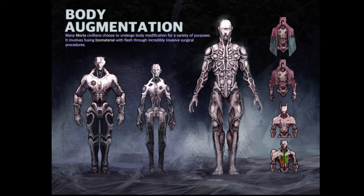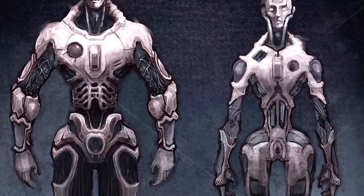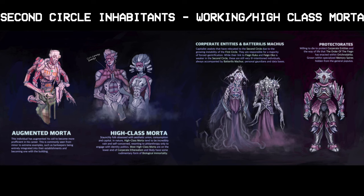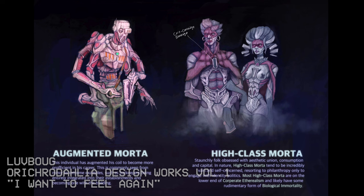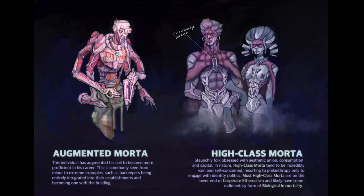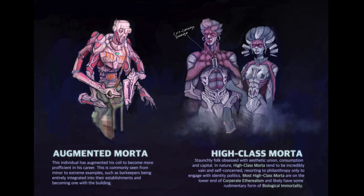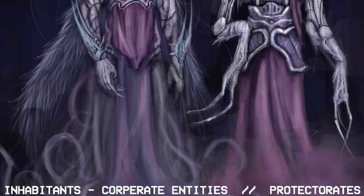Many morta civilians choose to undergo body modification for a variety of purposes, involving fusing biomaterial with their flesh through incredibly invasive surgical procedures. With the augmented morta, this individual has augmented his coil to become more proficient in his career — seen from minor to extreme examples, such as barkeepers being entirely integrated into their establishments and becoming one with the building. High class morta are staunchy folk obsessed with aesthetic union, consumption, and capital — incredibly vain and self-concerned, resorting to philanthropy only to engage with identity politics. Most high class morta are on the lower end of corporate etherealism and likely have some rudimentary form of biological immortality. Corporate entities are capitalist zealots that have relocated to the second circle due to the growing instability of the first circle, responsible for a majority of forced gentrification.